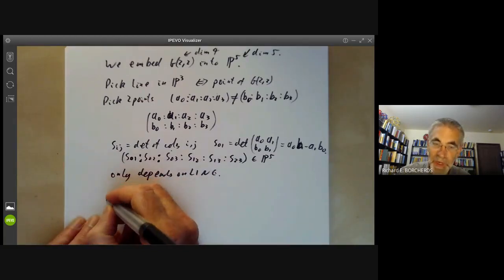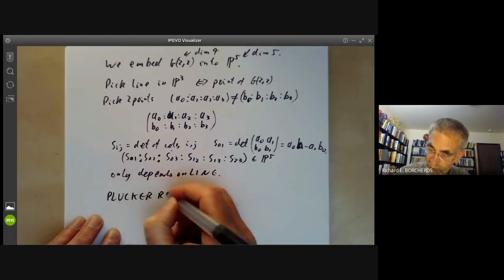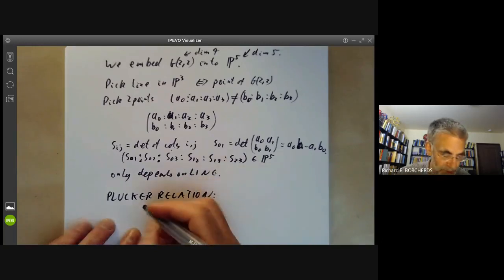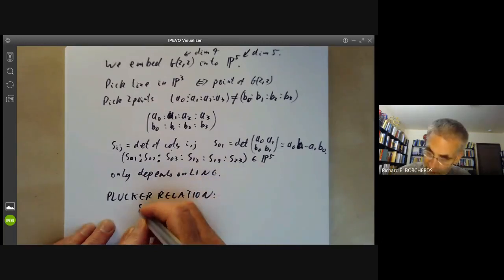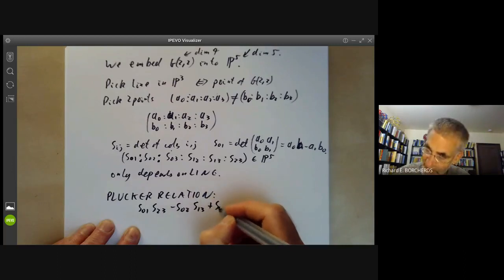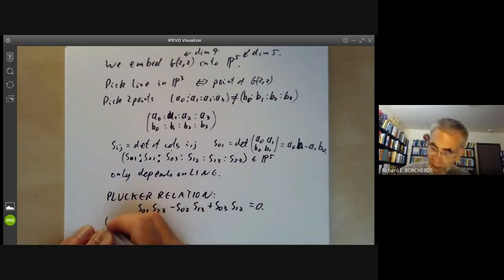The relation between them is the famous Plucker relation, which looks like this. It is S01·S23 minus S02·S13 plus S03·S12 equals zero. And this is easy to prove.